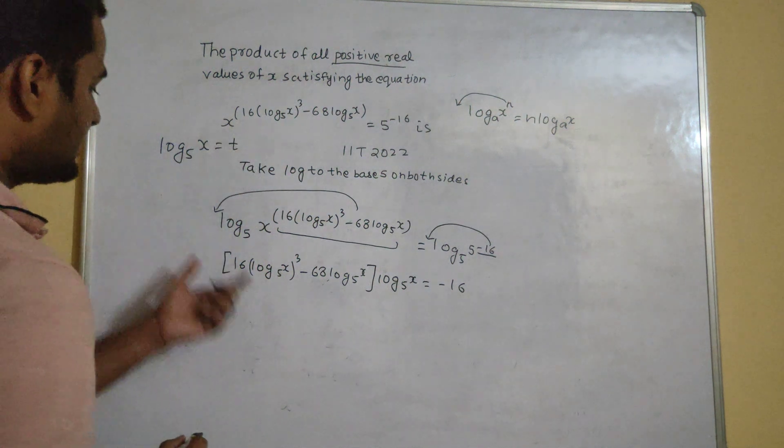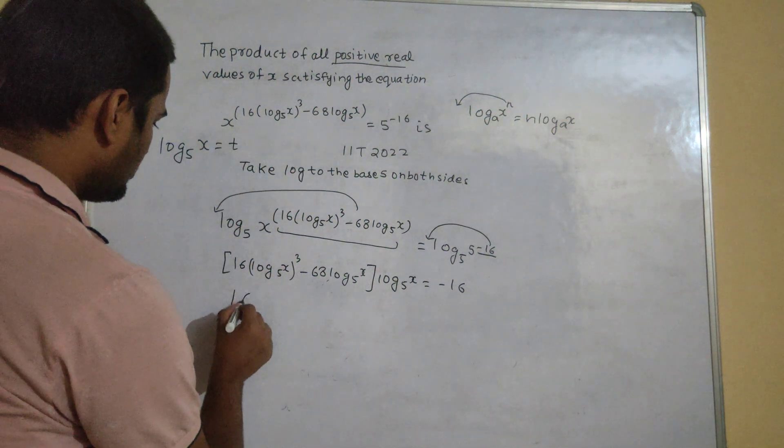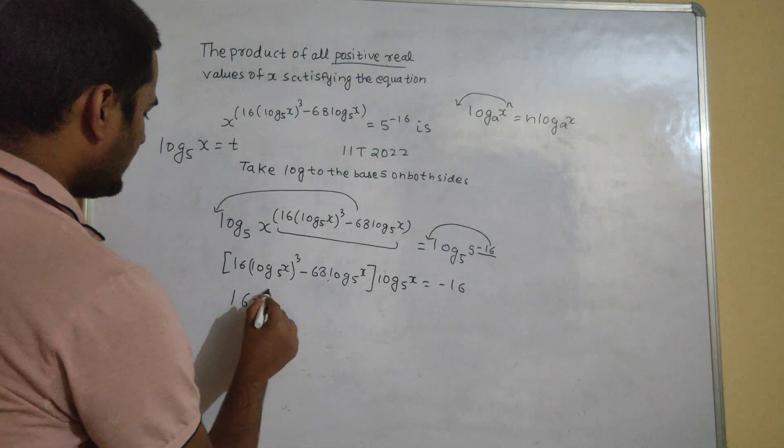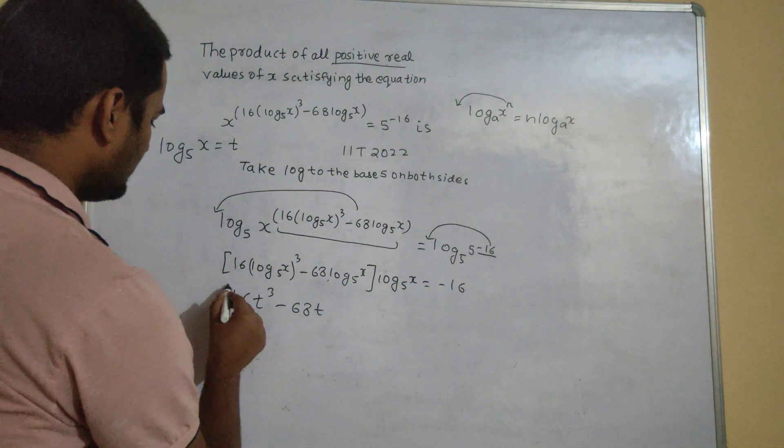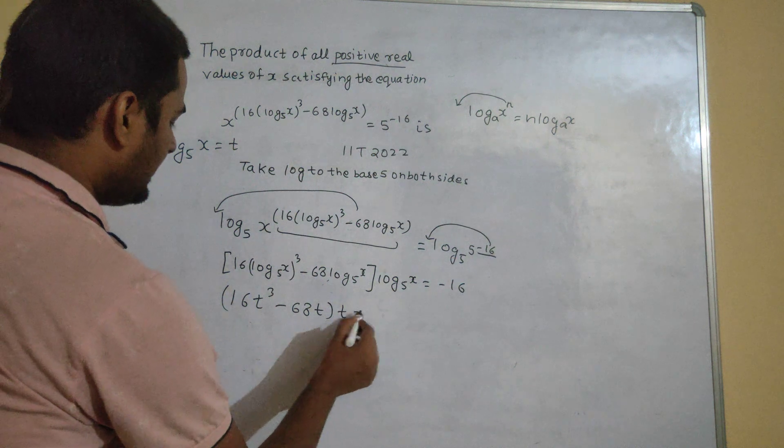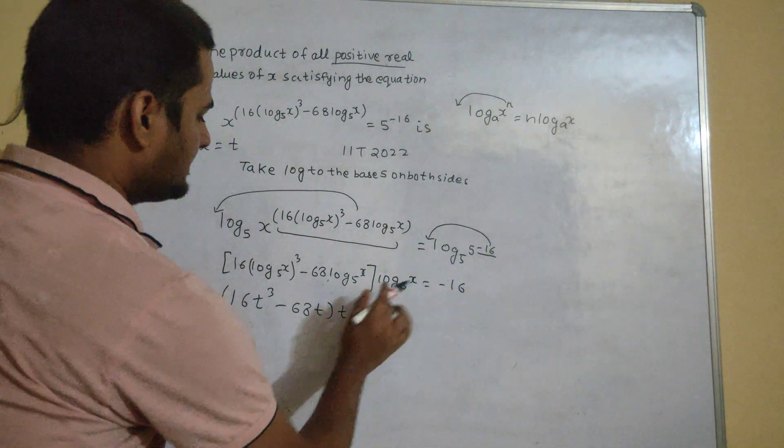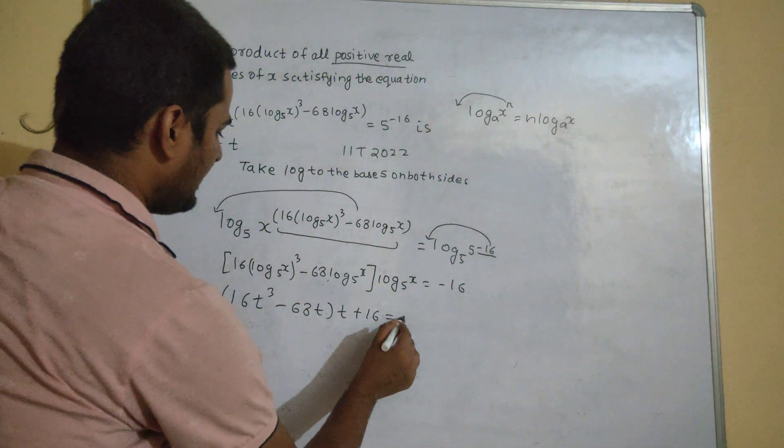So if I take t, this will reduce to 16 t cube minus 68 t multiplied by t. I can take this 16 to the other side equals to 0.